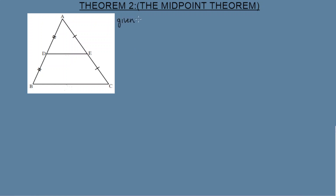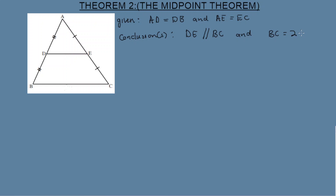When given that AD is equal to DB and AE is equal to EC, you can make the following conclusions: DE is parallel to BC, and BC is equal to two times DE. This conclusion is for when you need to calculate sides or prove parallel lines.